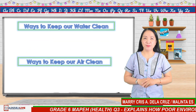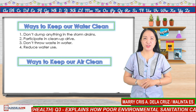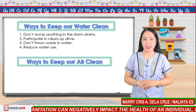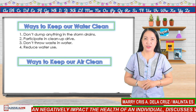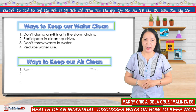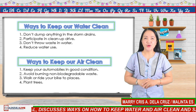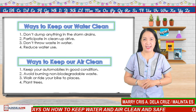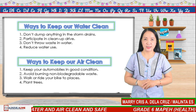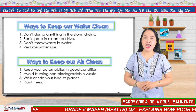Here are the ways to keep our water clean: number one, don't dump anything in the storm drains; number two, participate in cleanup drives; number three, don't throw waste in water; number four, reduce water use. Here are the ways to keep our air clean: number one, keep your automobiles in good condition to avoid smoke belching; number two, avoid burning non-biodegradable waste; number three, walk or ride your bike to places; number four, plant trees.